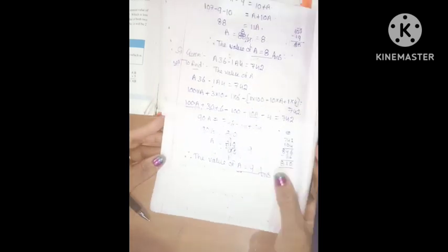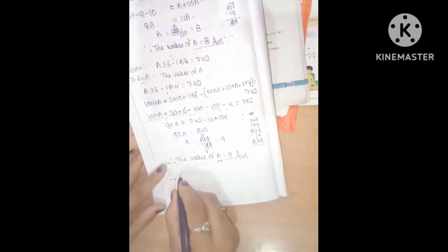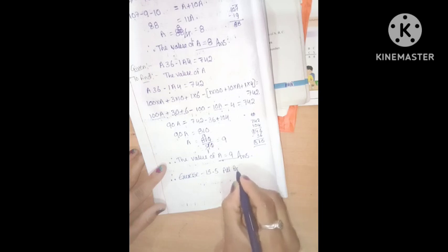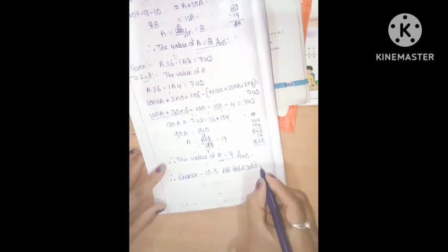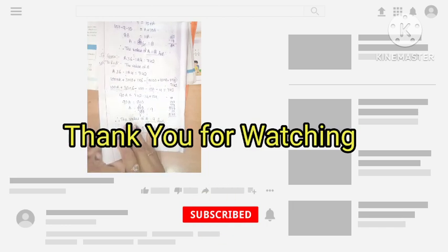This is the final answer. Are you clear, Gagansan? Yeah, this is a very nice method. This short method and the other method both give the same answer — 9 is also the same. Exercise 15.5, all problems and solutions are over. If you have any doubts, you ask me. Say thank you. Have a nice day.